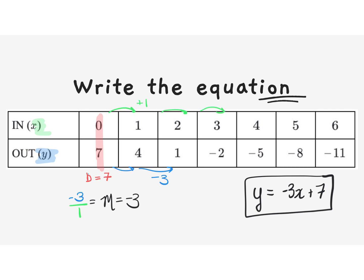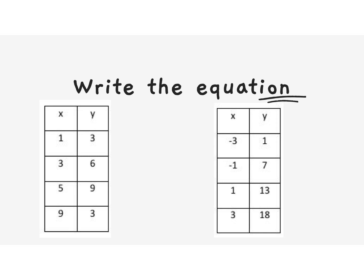Now this is the basic learning — we're going to try a couple that are a little bit more challenging. When you're looking at these two t-tables, they're facing up and down versus sideways, and we do not have the value of zero in either table. So we don't know what b is and we need to find b. Let's see if the idea of growth can help us find the letter b.